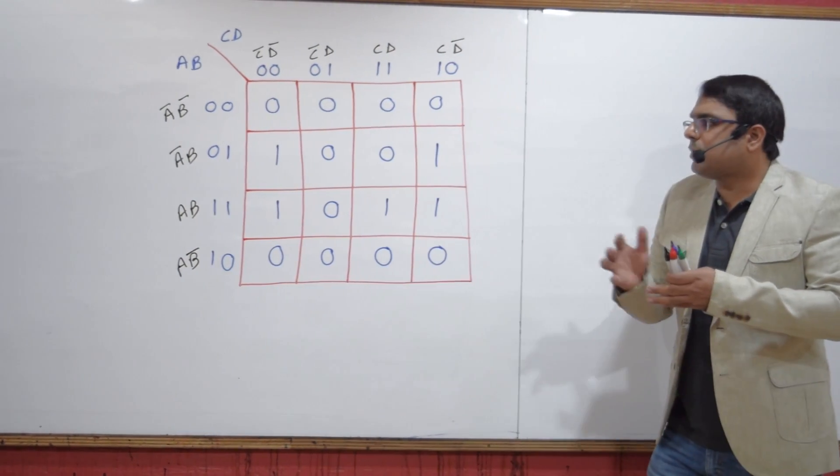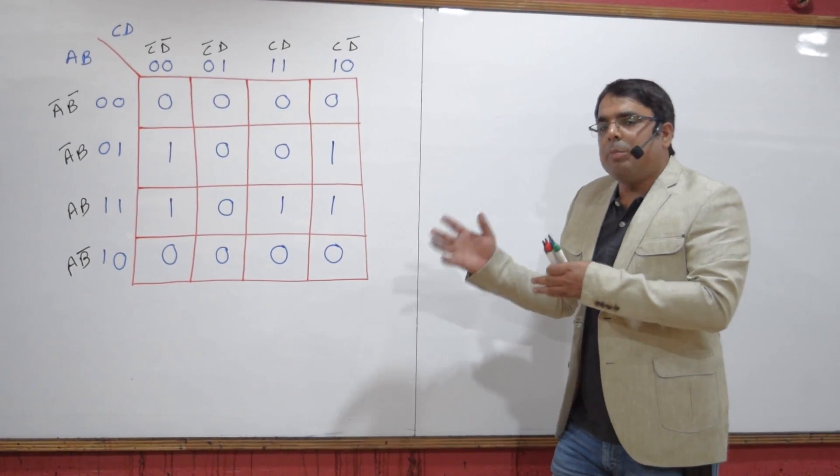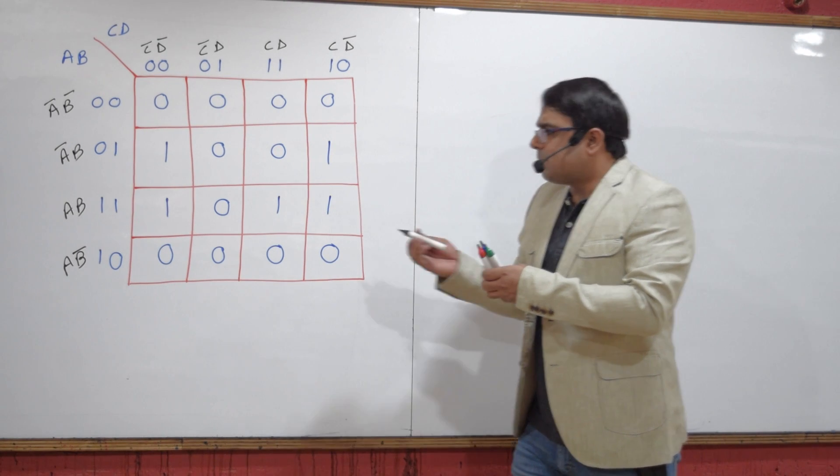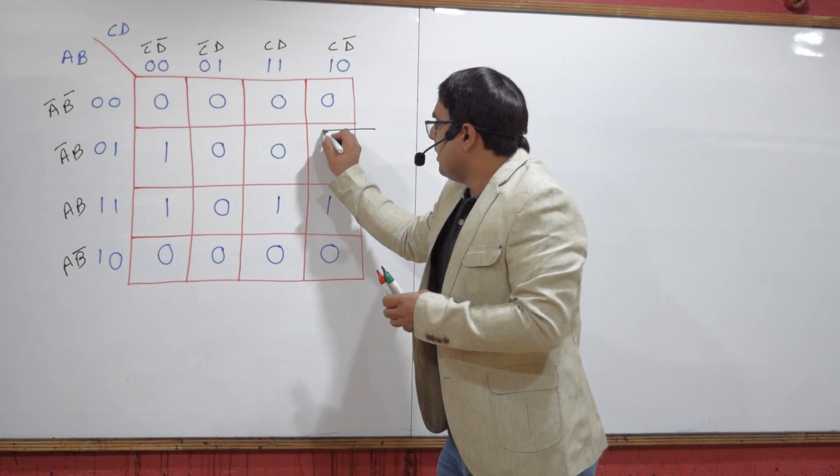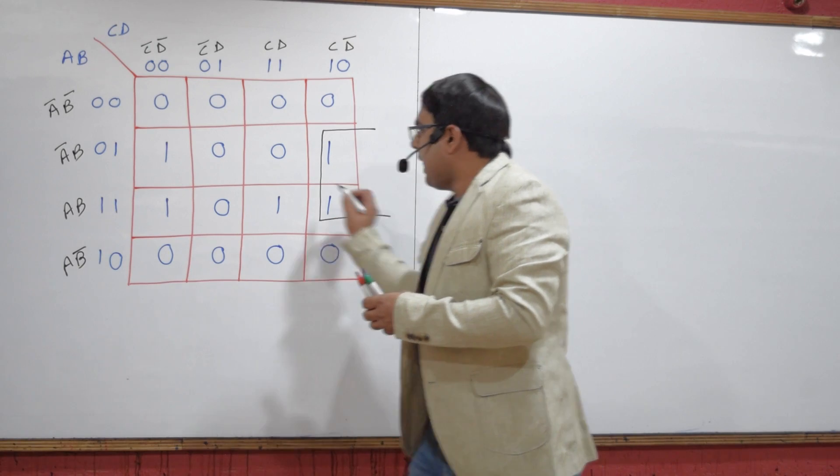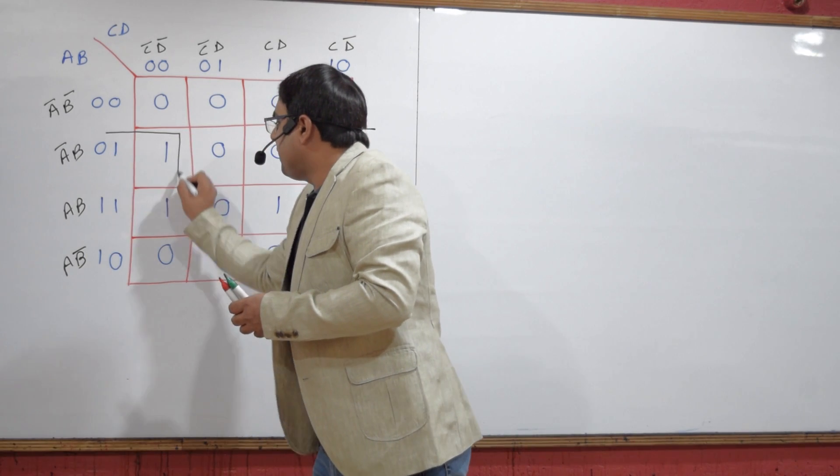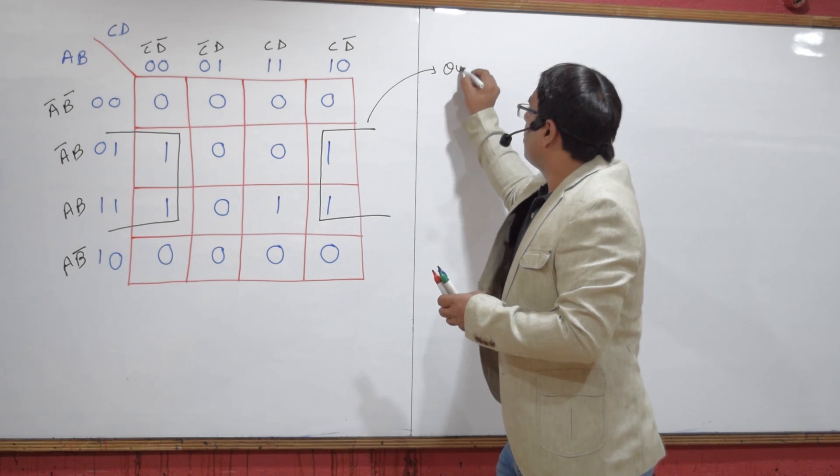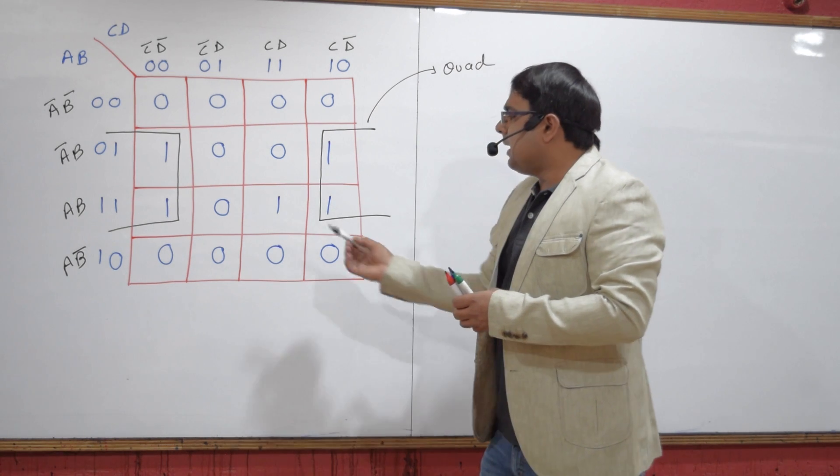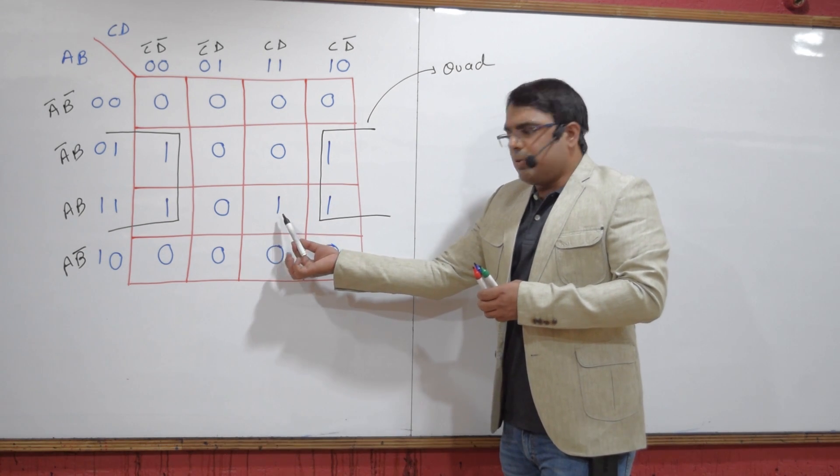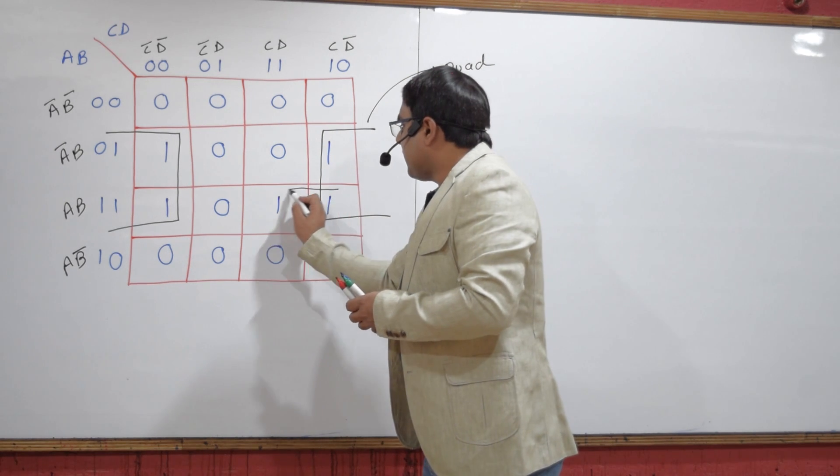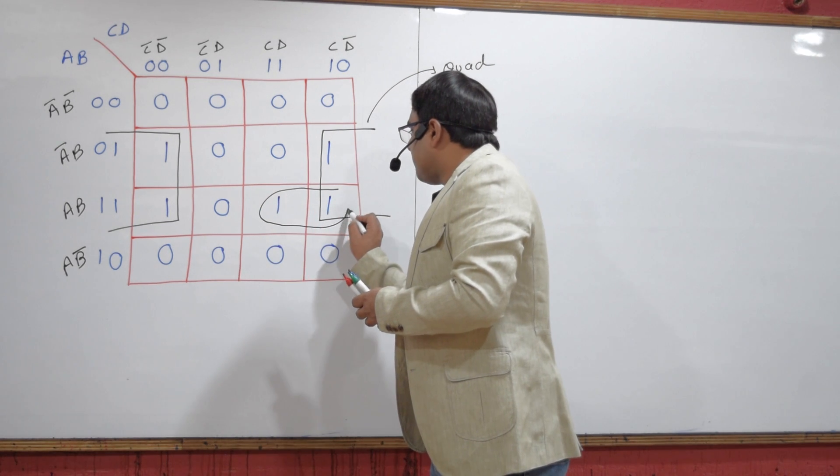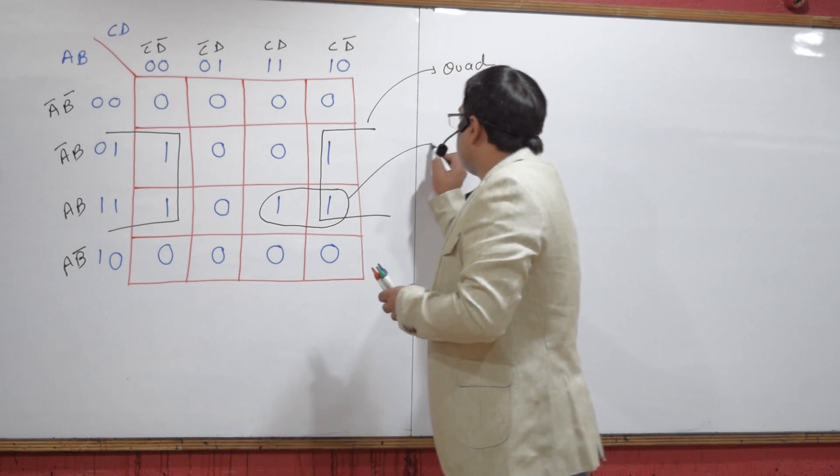There is a simple grouping here. These two min terms and these two min terms can be grouped together. This will give me a quad. Then there is only one min term left. This min term can be grouped with this particular min term, giving me a pair.